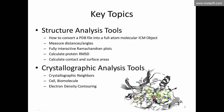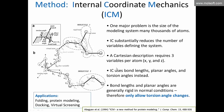ICM stands for Internal Coordinate Mechanics, which is the underlying basis of our software. One major problem of any modeling software is the size of the modeling system — potentially many thousands of atoms. By using internal coordinates, ICM substantially reduces the number of variables defining the system. Most other software uses Cartesian coordinates, so you have three variables per atom: x, y, and z. Internal coordinates use bond lengths, planar angles, and torsion angles. We assume that bond lengths and planar angles are generally rigid, so we're only looking at how the torsion angles change. This has application in protein folding, protein modeling, docking, and virtual screening.